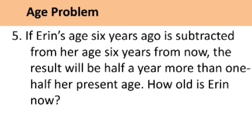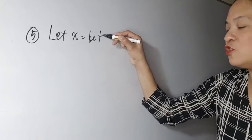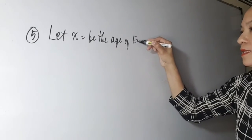Sometimes you will be asked to solve age problems. Problem number five: If Erin's age six years ago is subtracted from her age six years from now, the result will be half a year more than one-half her present age. How old is Erin now? You're asked to find the age of Erin now. Let X be the age of Erin now.